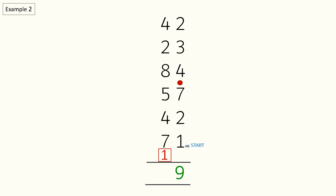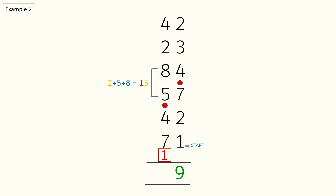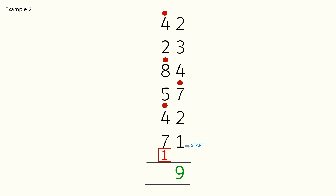Moving on to the tens side, we will start adding from the bottom up. 1 plus 7 plus 4 is equal to 12. We will put a dot for 10 and carry over 2 from 12. Moving on: carry over 2 plus 5 plus 8 is equal to 15, so we will put a dot for 10 and write the carry over 1 in the answer section. Lastly, we count the number of dots in the tens section — there are three dots, so we write 3 in the answer section. Our final answer is 319.